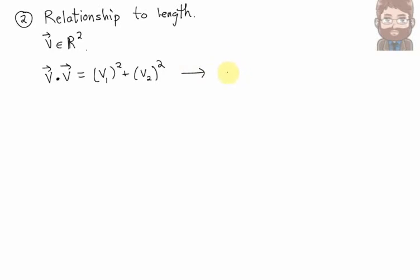Now, this looks pretty familiar. If you remember, the formula for the length of a vector is just the square root of that quantity. So, if I take the square root of the dot product of a vector with itself, I get its length.